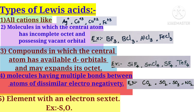And elements with a six-electron state — meaning three electron pairs — also act as Lewis acids. Sulfur and oxygen are examples having a six-electron state. To summarize, the types of Lewis acids are: all cations; molecules with incomplete octet and vacant orbital; compounds with available d-orbitals that can expand their octet; molecules with multiple bonds between atoms of dissimilar electronegativities; and elements with a six-electron state.